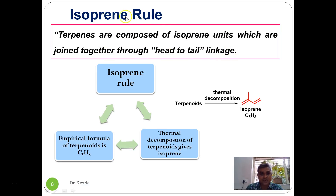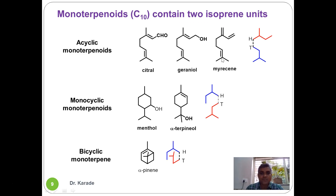The isoprene rule was proposed by Otto based on two important observations. First, the empirical formula of all terpenes was found to be C5H8. Second, the thermal decomposition of all terpenoids gives several products, one of which was isoprene. From these observations, Otto concluded that terpenes are made up of isoprene units joined through head-to-tail linkage. This statement is called the isoprene rule or special isoprene rule, and it is useful in understanding the structures of terpenoid molecules.